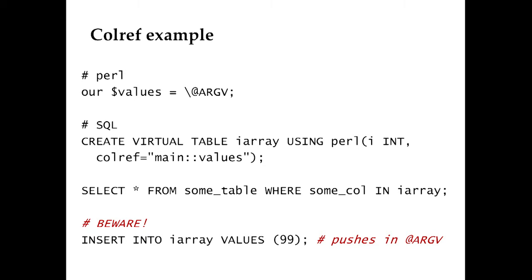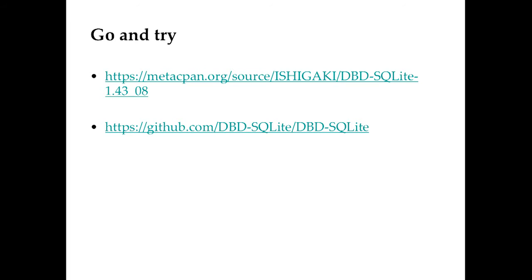This is a very easy way to do a SELECT where I take one value which has to belong to that array. Beware because it goes in both directions — here in this example I'm reading data from the Perl variable, but I can also write data. If I do an INSERT from SQL into that table, the result is I will push some new value into my argv Perl variable. So it goes both ways, and it's a nice way to integrate.